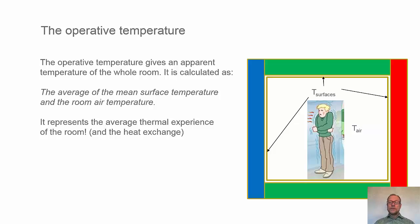The operative temperature is a way of finding an apparent room temperature which takes both the longwave radiation and convection into account. So the operative temperature is calculated as the average of the mean surface temperature and the room air temperature. It represents the average thermal experience of the room, which is basically a heat exchange with the surrounding room.